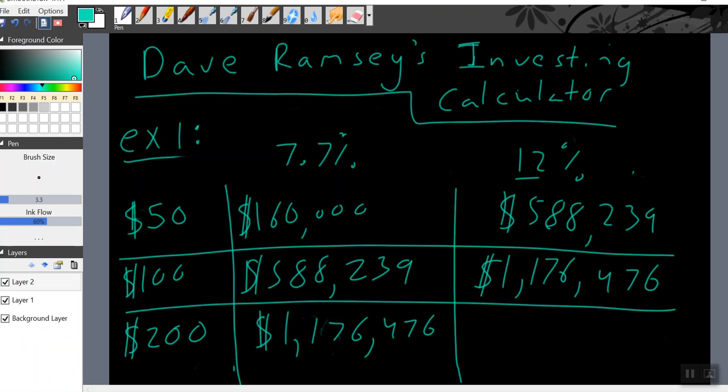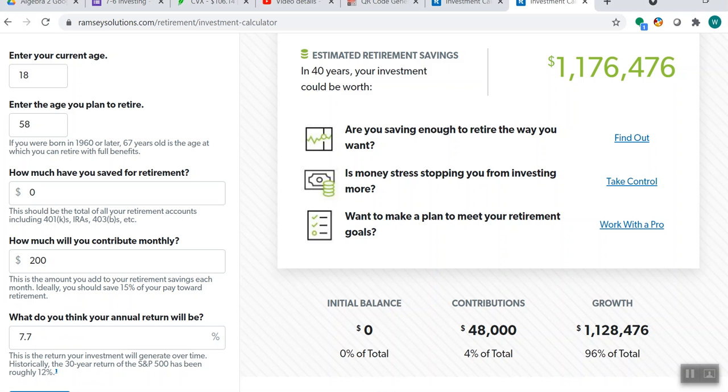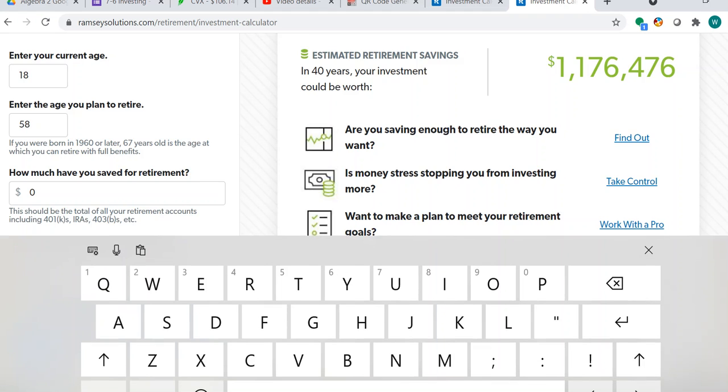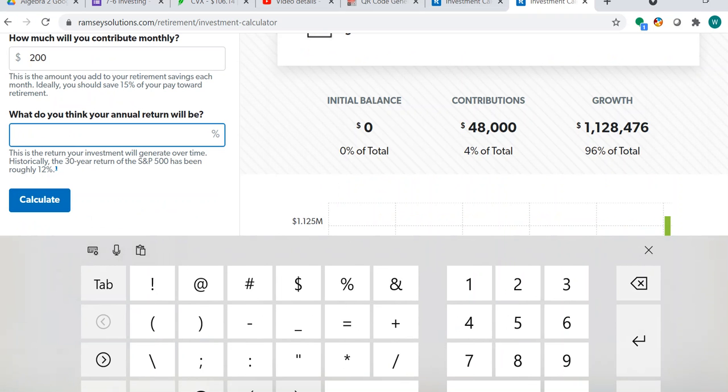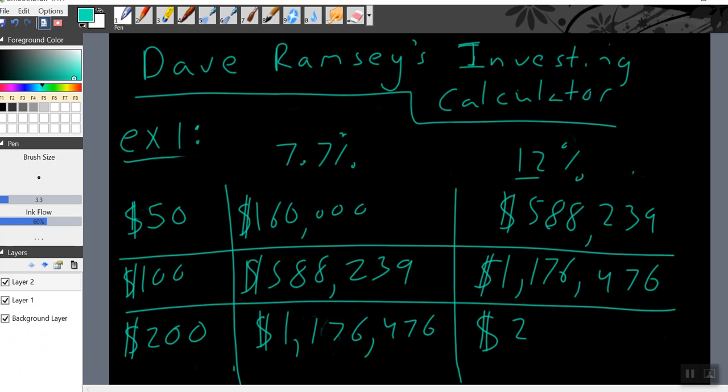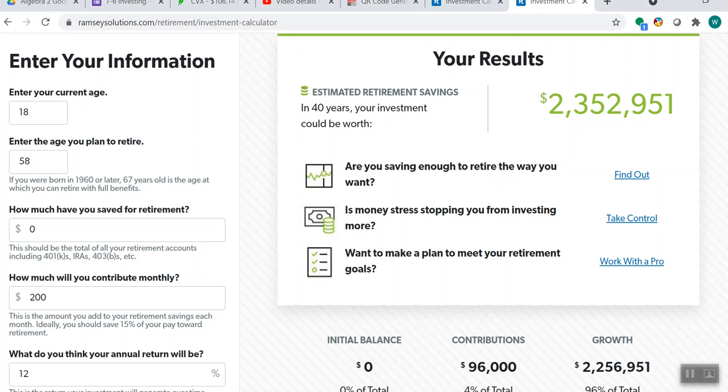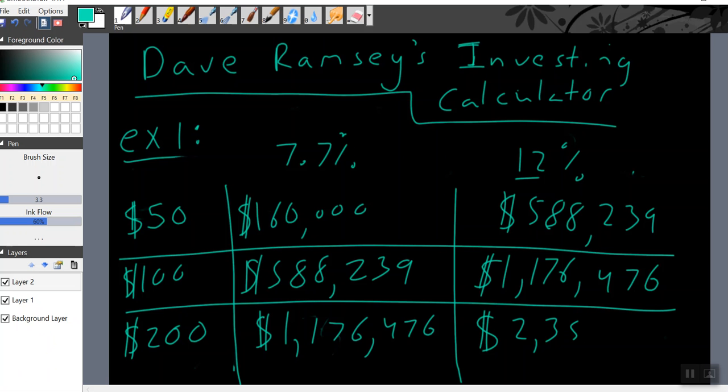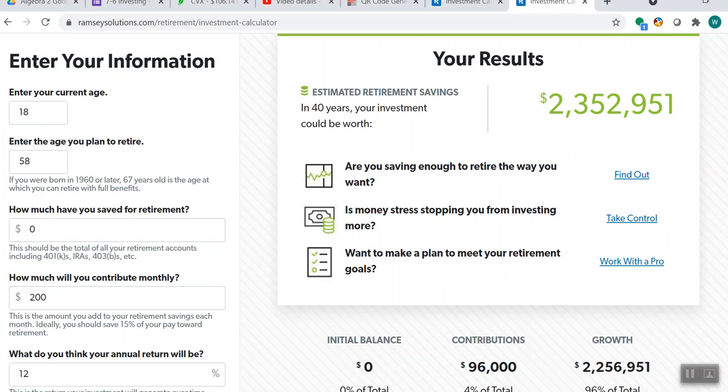What if you invested that $200 at a 12% rate of return? Guys, your $200 would become $2,352,951.